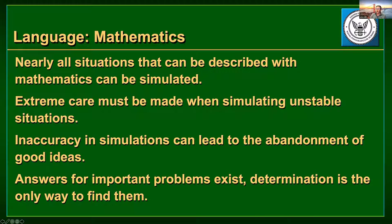Hamming being a mathematician always brings his talks back to mathematics. Nearly all situations that can be described as mathematics can be simulated. And the converse: almost all situations can be described mathematically. Some highlights we talked about before were unstable situations — just because you can describe something in mathematics, if it's unstable, is it going to make for a good simulation?